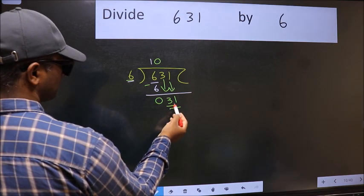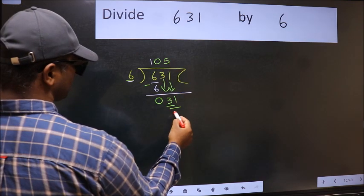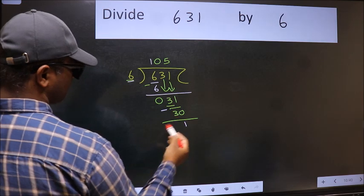Now 31. A number close to 31 in the 6 table is 6 times 5 is 30. Now we should subtract. We get 1.